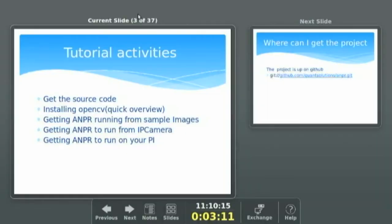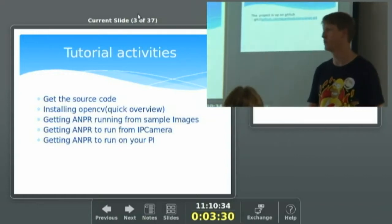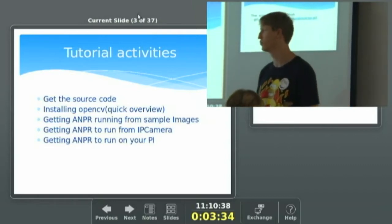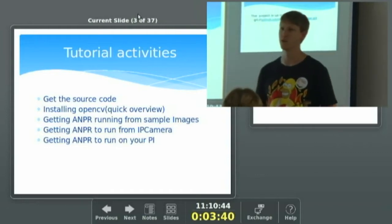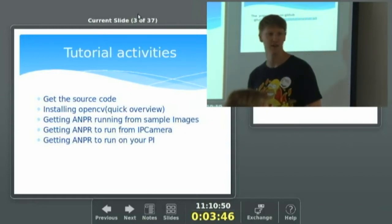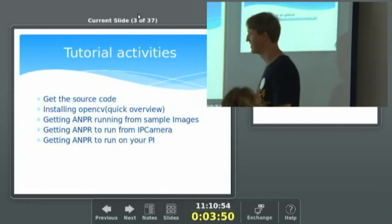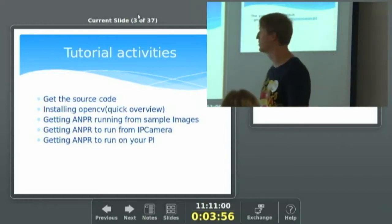A quick overview of today's activities: first, I'll show you where to get the source code. Second, a quick overview of installing OpenCV — while it's not a problem on most Ubuntu systems, it can get complicated on a Raspberry Pi if you want the newest source. Then we'll get the ANPR running from sample images, then access the IP camera set up here pointing at someone's number plate I took from the parking lot — luckily I do know the person. Lastly, we'll try to get it running on the Raspberry Pi.